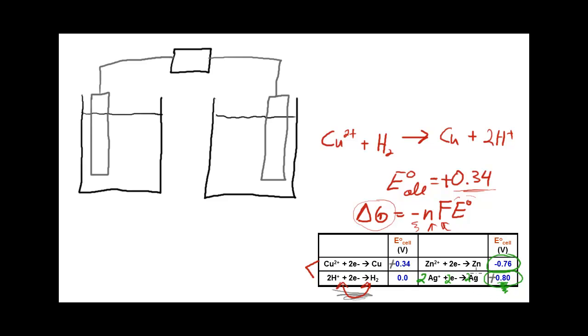Now we're going to combine those two reactions. This will stay a reduction, that's going to flip to be an oxidation, the electrons will cancel, and I'll get 2 Ag plus plus zinc goes to zinc 2 plus plus 2 Ag. We can see that silver is being reduced and zinc is being oxidized.